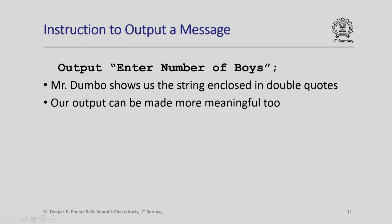Now when the string enclosed in the double quotes — without the double quotes of course — is shown to us, we know some input is expected. And suppose we write our input instruction after this: very obviously Dumbo will first show this output to us. We know now some input is expected and then we are ready to type a value in. In exactly the same fashion, we can use the same output instruction to make our output more meaningful — namely the final value of n_students which Mr. Dumbo has to show us. Instead of just saying output n_students, we can output first a string like "total number of students in the class" and then output that value.